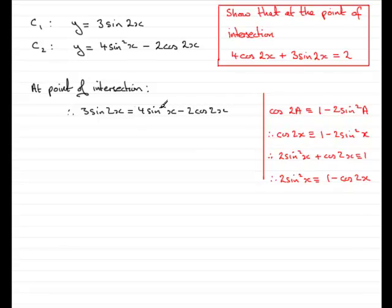Now we've got 4 sine squared x, so that's going to be twice as much as that. So if we multiply both sides by 2, we'd end up with 4 sine squared x is identical to 2 minus 2 cos 2x. And it is this that I would want to substitute in for the 4 sine squared x.